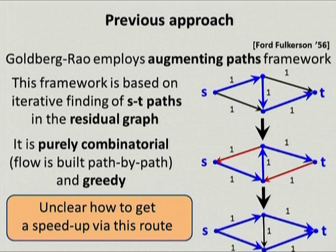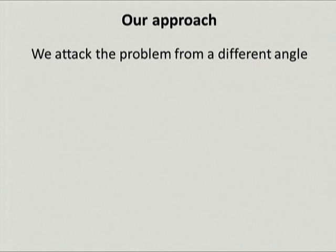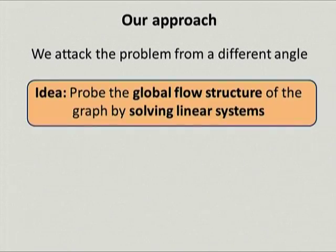The tempting thing would be to look at the Goldberg-Rao algorithm and try to speed it up by leveraging the fact that we are okay with approximation and that our graph is undirected. But this is exactly where we have been stuck for a long time. We don't know how to do it. So the approach we are actually taking is a new one: in one sentence, we try to probe the global flow structure of the graph by solving a linear system.